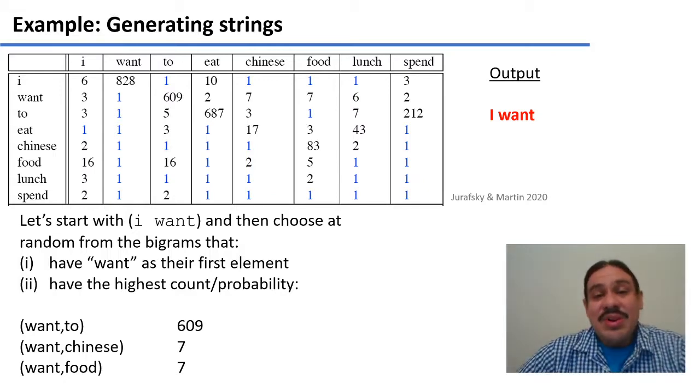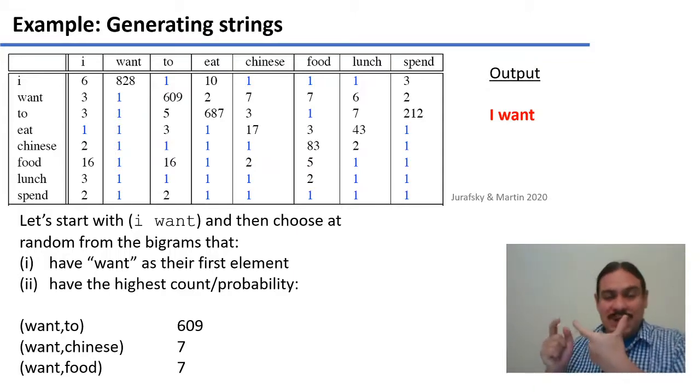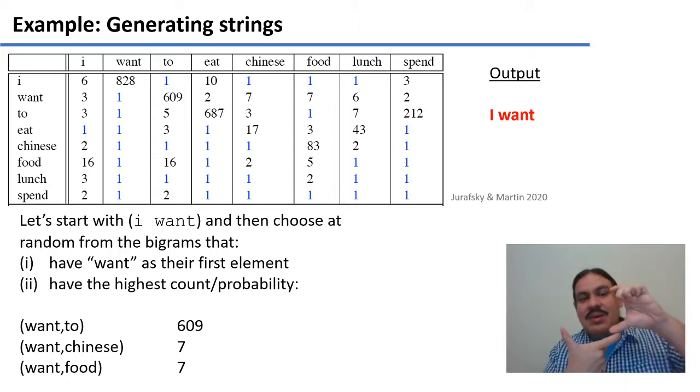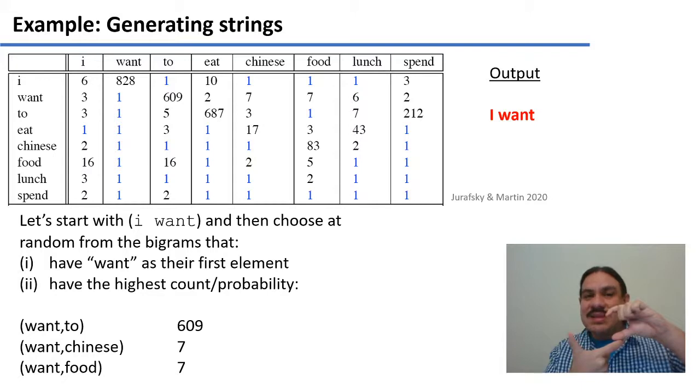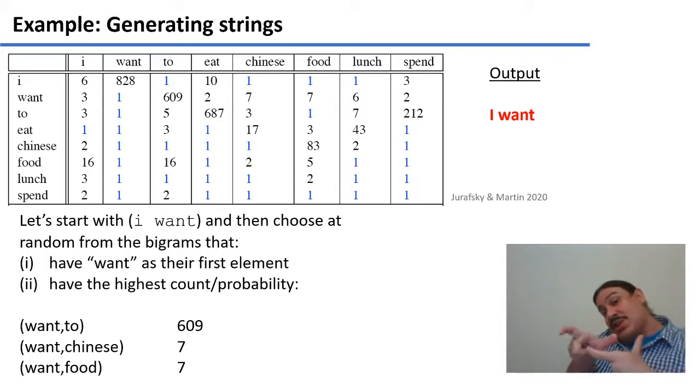So let's choose a random starting point. How about I want. We have the bigram I want, which has two elements. I want. Let's take the second element and make it the first element of a new bigram. Where can we go? We have want as our first element. And then what are the possible second elements of that bigram? It could be want to, which happens 609 times. It could be want food, which happens seven times. Same as want Chinese. It could be want lunch, which happens six times. So let's go with the one with the highest count. Want to. So we have I want and let's add want to.